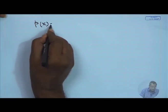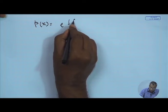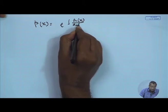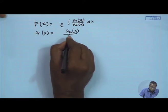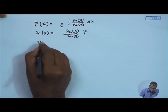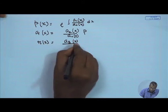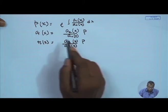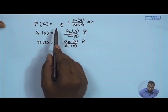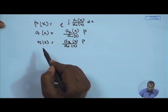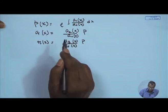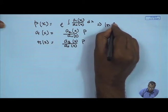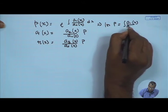We define p(x) = exp(∫ a₁(x)/a₀(x) dx), q(x) = a₂(x)/a₀(x) · p, and r(x) = a₃(x)/a₀(x) · p. If we define these quantities p, q, and r, substituting back into equation 1 recovers the original equation. Taking the logarithm of both sides: ln p = ∫ a₁(x)/a₀(x) dx.